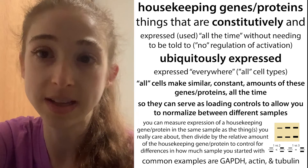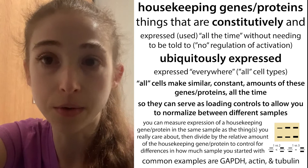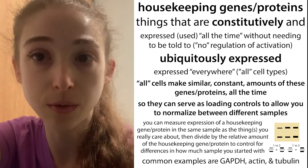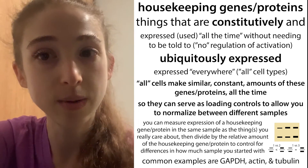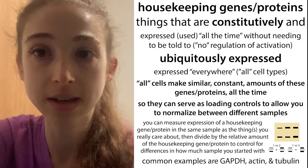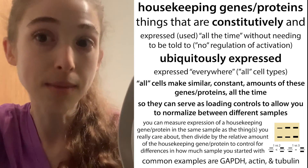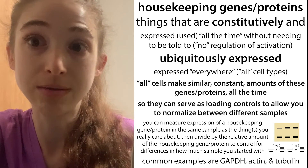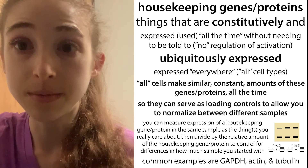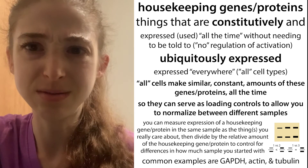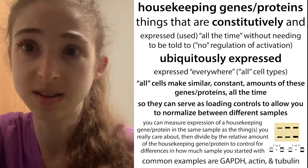That is what we mean by housekeeping genes. These would be things like GAPDH or actin — you run them and test for them in the same sample that you're testing your other genes, and this way you're able to do a direct comparison between your samples by normalizing for the total content that you added.